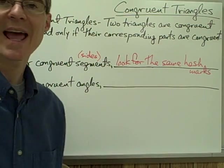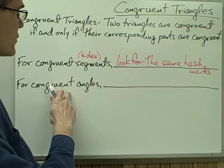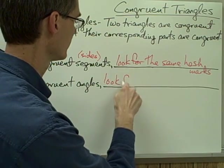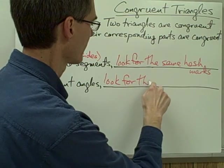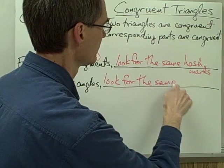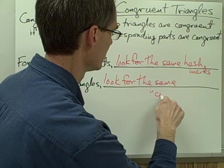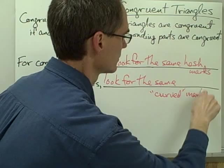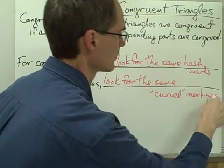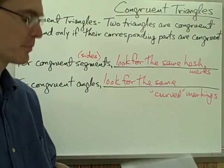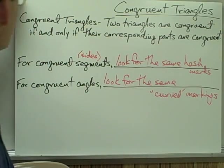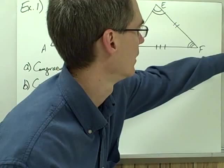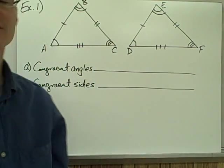We've talked some already about hash marks. When we're looking to identify congruent angles, we look for the same curved markings — sometimes we say curved hash marks. So let's take a look at some examples of two triangles that we want to identify as being congruent.